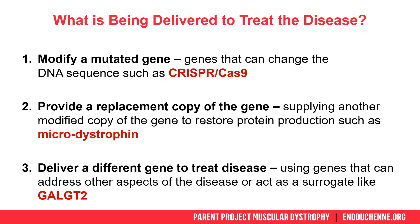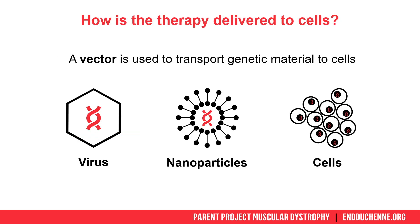For how that genetic material is delivered, this is performed by the vector. There are many different types of vectors that could be used or are currently in development: modified viruses, nanoparticles, and cells can all be used to transport that important genetic material into the body. These different vectors have advantages and disadvantages that will ultimately lead to their selection for a particular treatment.